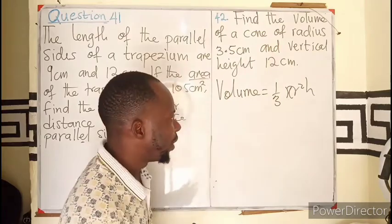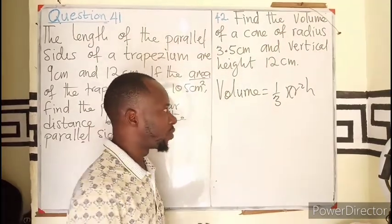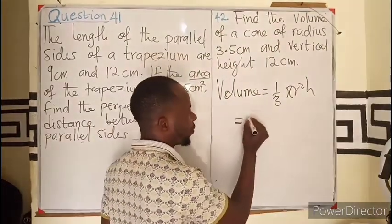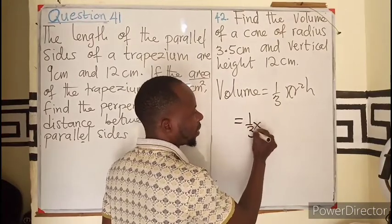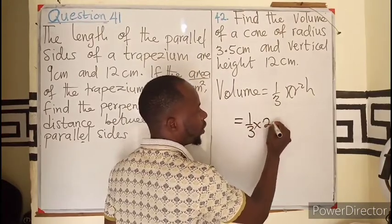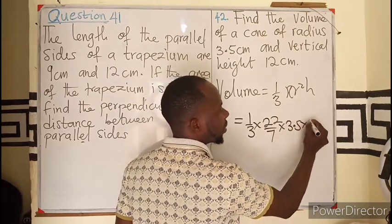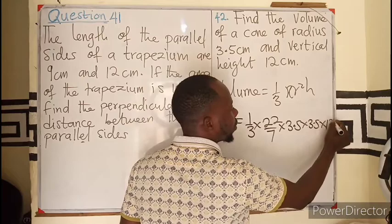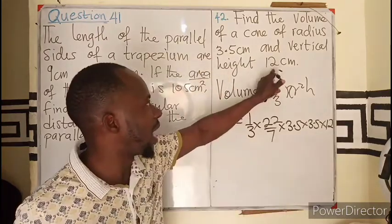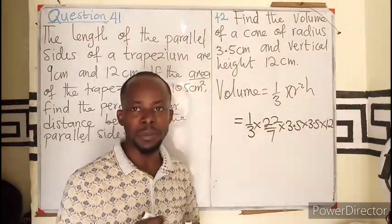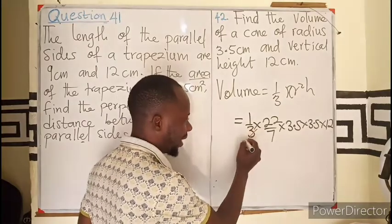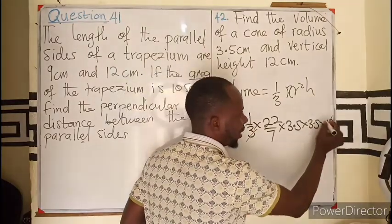The area of the base is a circle. So by substitution, we have 1 over 3 times 22 over 7 times 3.5 times 3.5 times 12. I know that 3 can go into 12 four times.